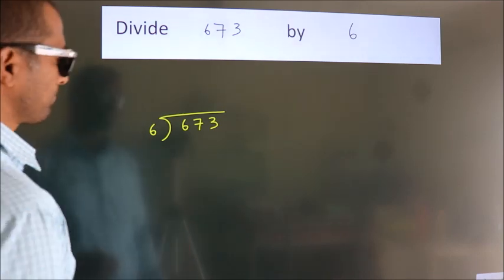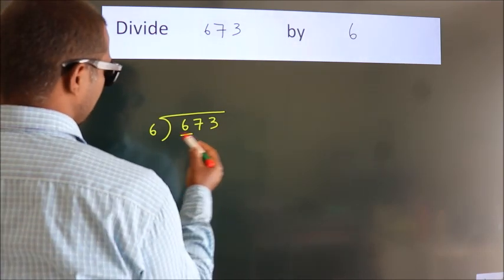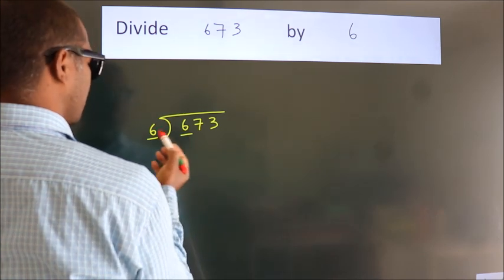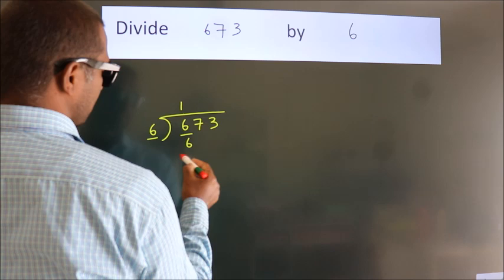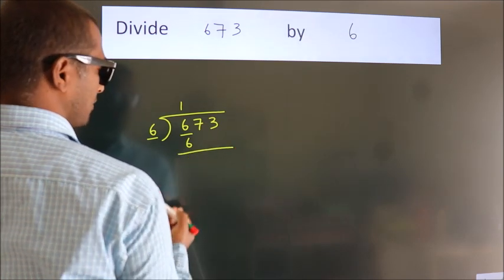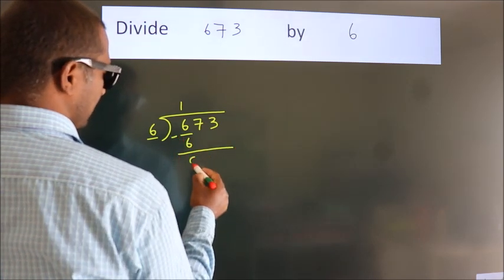Next, here we have 6, here 6. When do we get 6? In the 6 table, 6 once is 6. Now we subtract and get 0.